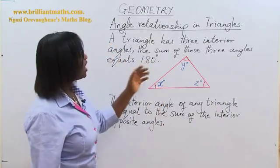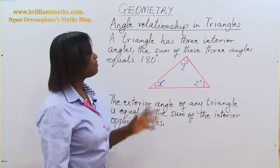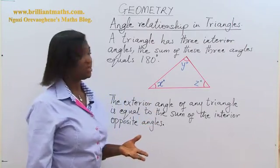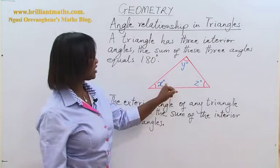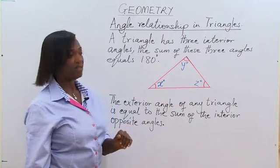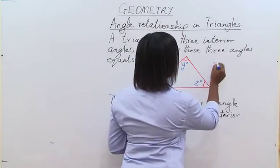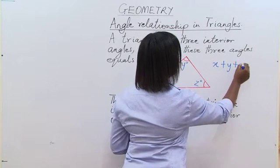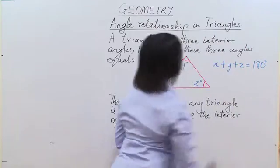A triangle has three interior angles, and the sum of these three angles equals 180 degrees. As you can see, we have a triangle. The angles are angle X, Y, and Z. So we are saying that X plus Y plus Z is equal to 180 degrees.